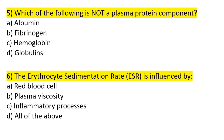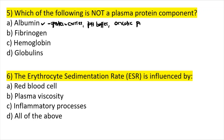Question five: which of the following is not a plasma protein? Albumin is a plasma protein — it functions as a carrier protein, a pH buffer, and it contributes to oncotic pressure. Always remember that all plasma proteins are produced in the liver.